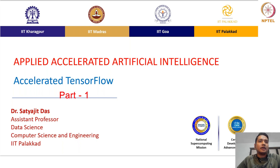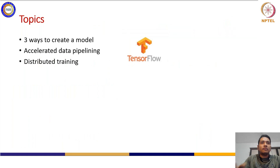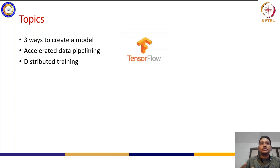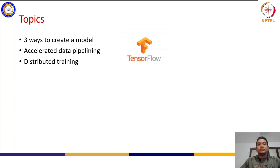Before going into that, we will see how to create models in three different ways. The sequential way is the best way to start for beginners. It is very flexible. If you want more control over the definition of the model, you go for the functional way or the subclassing APIs. These three ways we will talk about, then we will talk about the accelerated data pipeline.